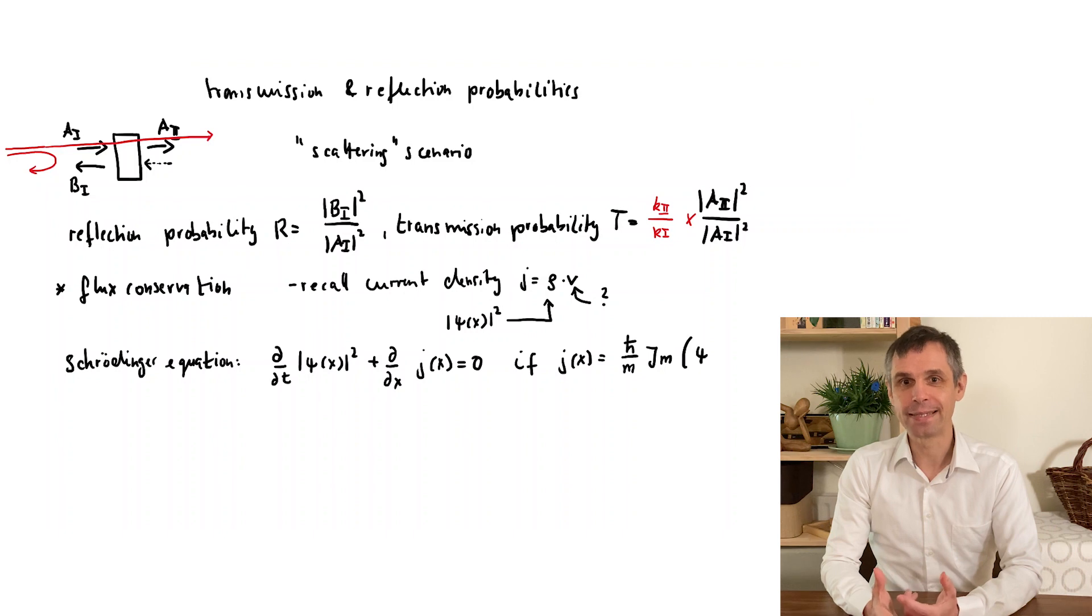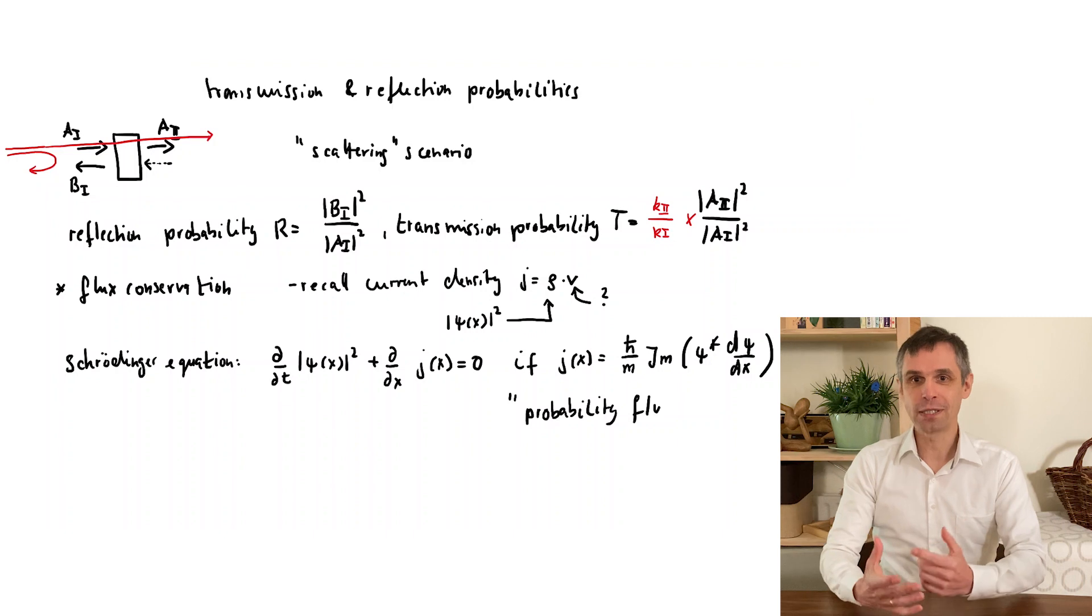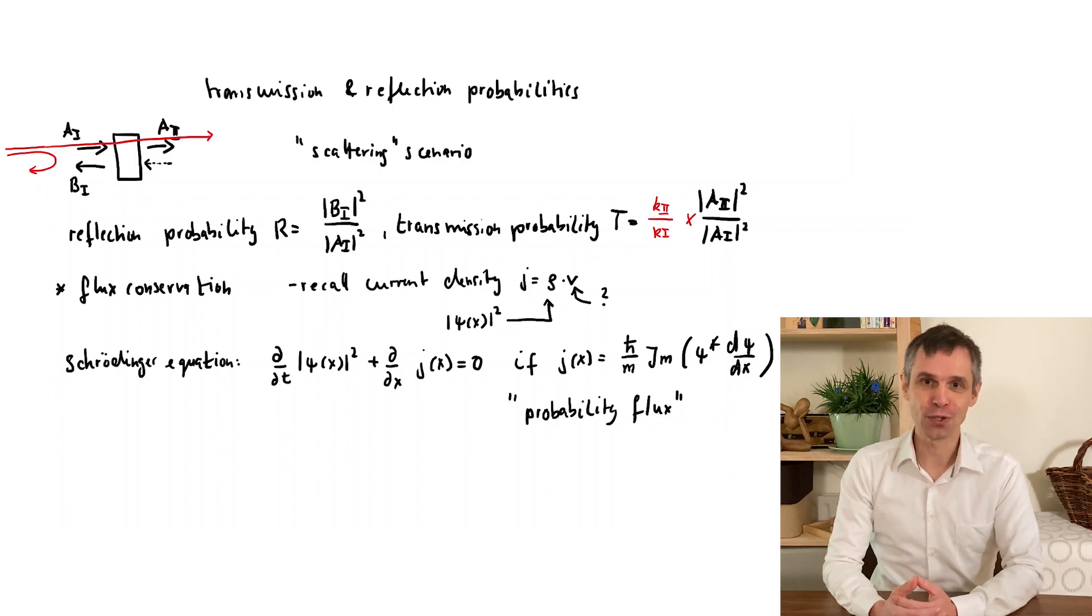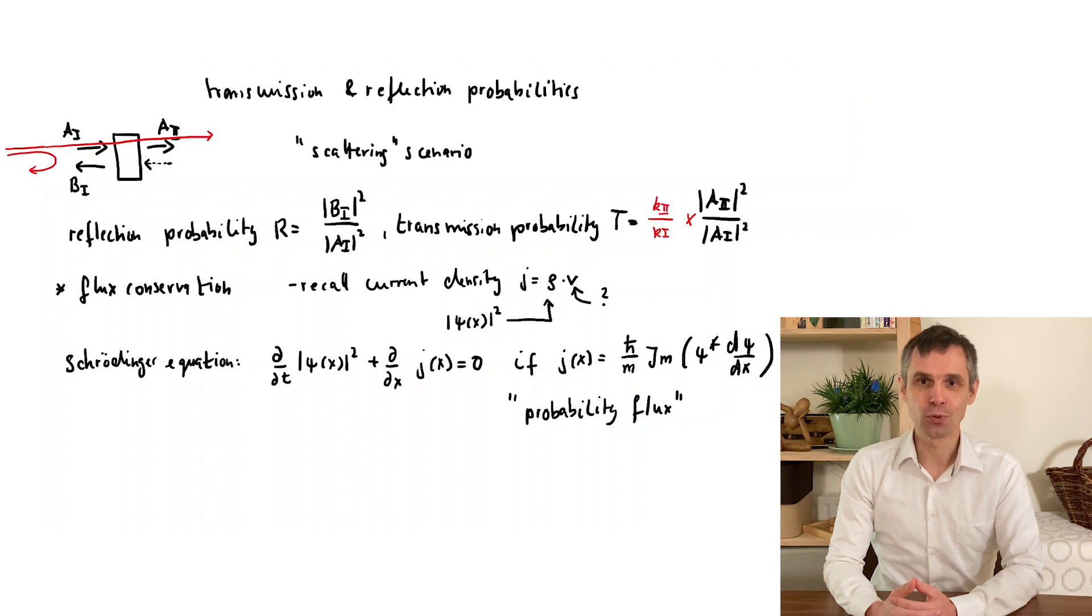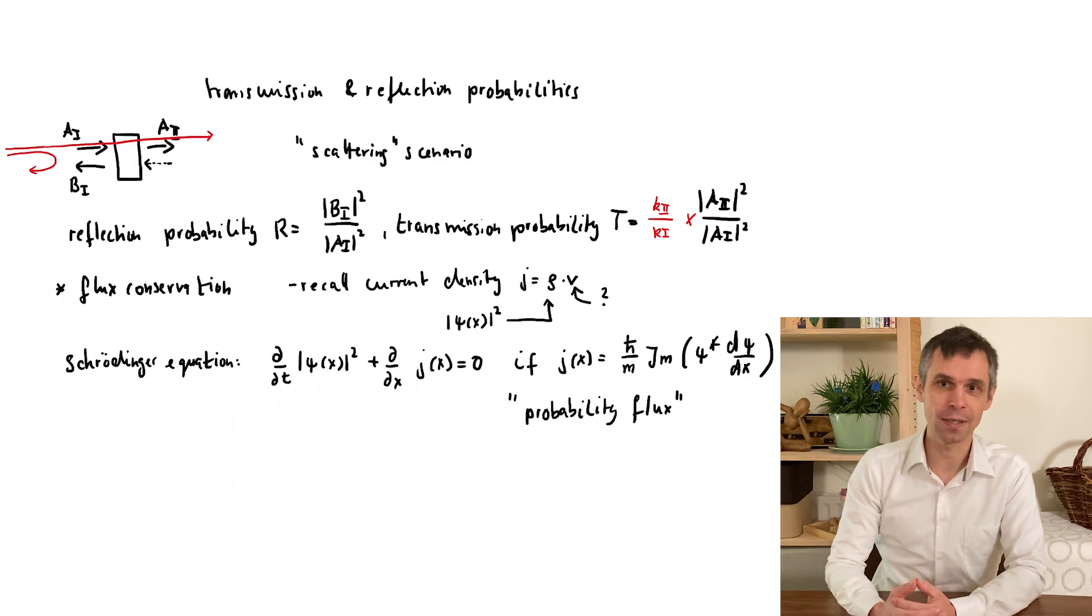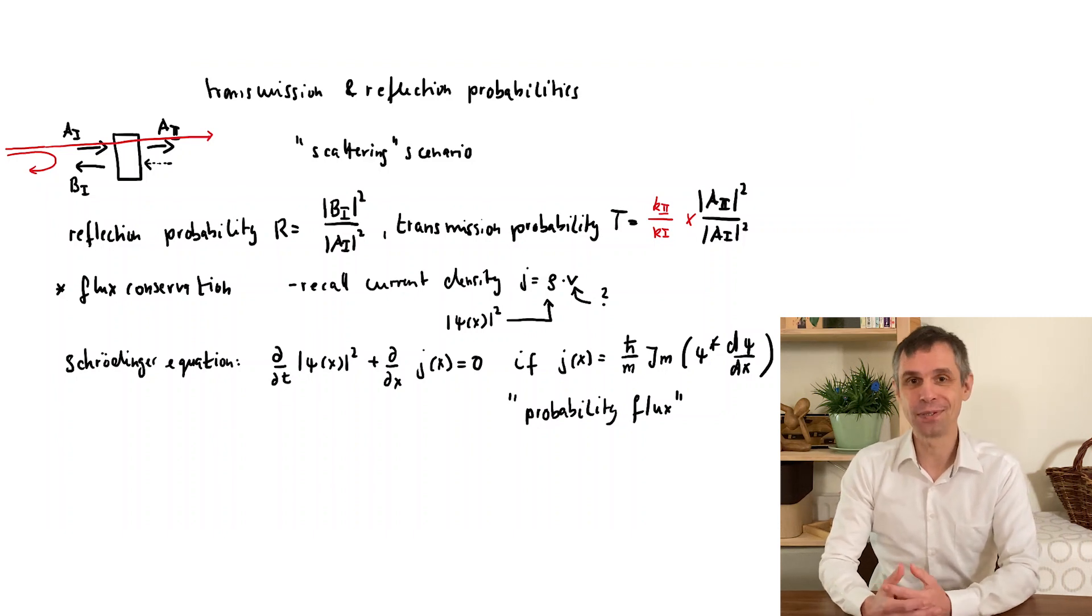Here, Im indicates the imaginary part. I have here written down the continuity equation for the stationary case that we are currently dealing with. So the temporal derivative actually vanishes, and the current then must be constant throughout space, just as I said. But I will show you the general case in a minute, and it results in the same expression for the current. The derivation is actually not that complicated and very instructive.